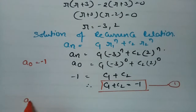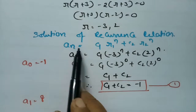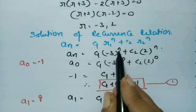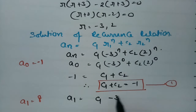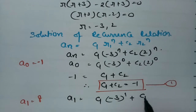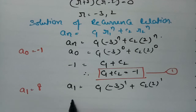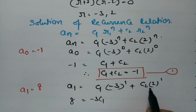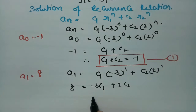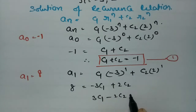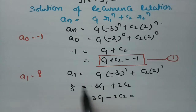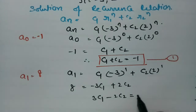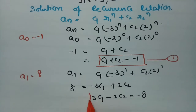For A1 = 8, we put n = 1: A1 = C1·(-3)^1 + C2·2^1 = 8. This gives -3C1 + 2C2 = 8. Sending terms to the other side gives -3C1 + 2C2 = 8, or equivalently, -3C1 - 2C2 = -8. This is equation 2. We now have two equations to solve.